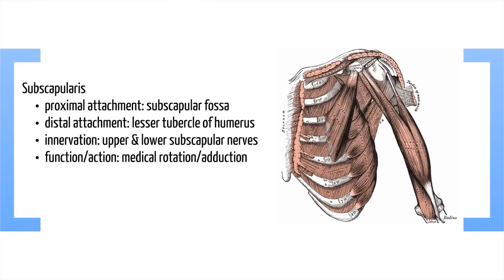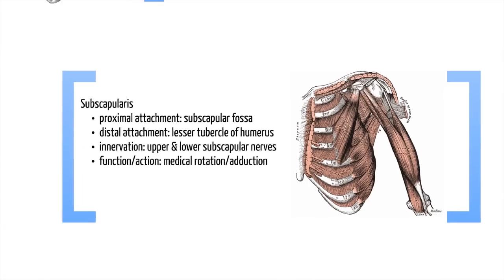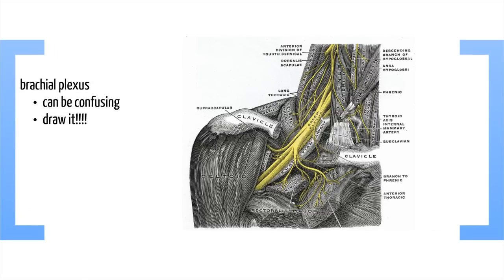And finally, subscapularis. Its proximal attachment is the subscapular fossa, and it inserts into the lesser tubercle of the humerus. It's innervated by the upper and lower subscapular nerves. Its main action is medial rotation and adduction. So that concludes the rotator cuff muscles.